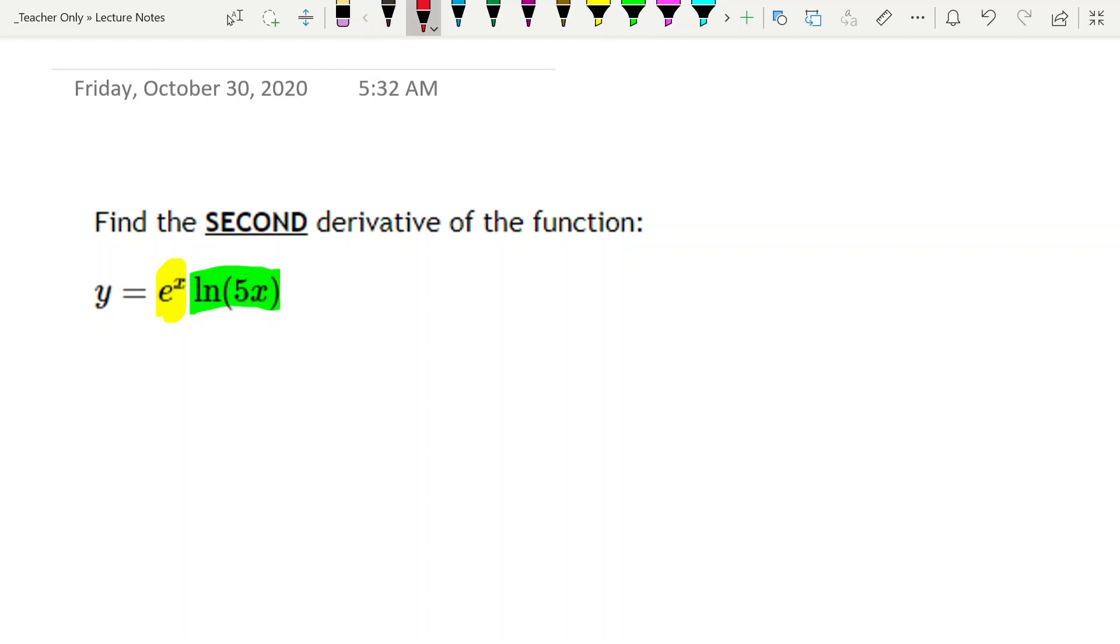And I will say there are multiple paths to doing this problem, so just because I'm doing it this way does not mean that another way that you see would not be appropriate. But I'm going to do the product rule, which would be the derivative of the first, leave the second factor alone, and then we do the derivative of the second, leave the first factor alone.